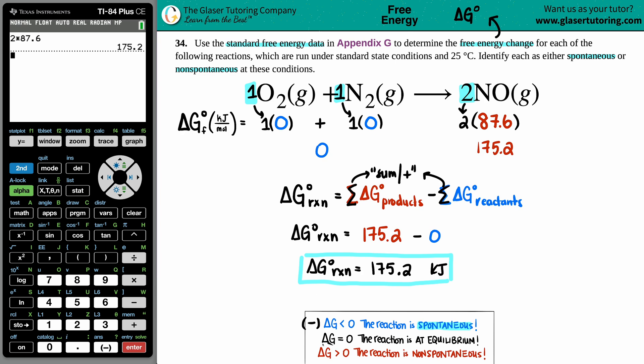However, if your delta G is greater than zero, that means it's a positive. You do need some energy from an outside source to make it run. That's why it's non-spontaneous. Here, 175.2, that's a positive value. We're greater than zero. So this would be non-spontaneous.